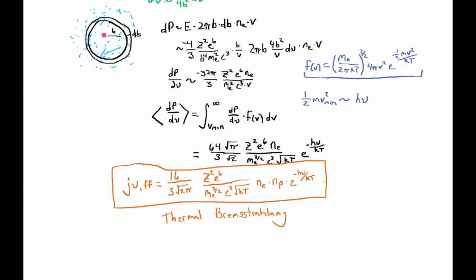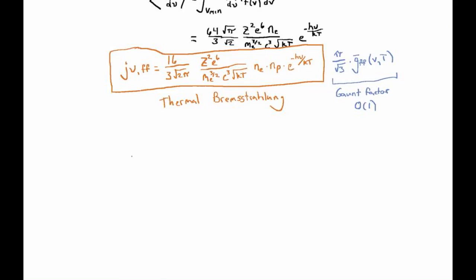If you want to be really exact here, there's one more factor you'd want to put in. It's called the Gaunt factor. It's a factor of pi over the square root of 3 times g bar of nu T, which is a function of velocity and temperature. This is just a quantum mechanical correction factor called the Gaunt factor, and it's of order unity.